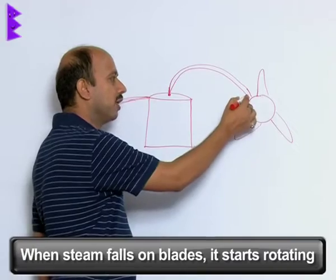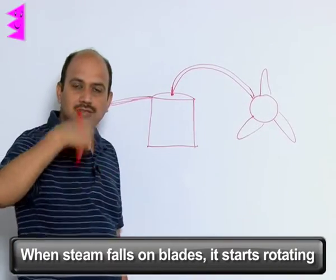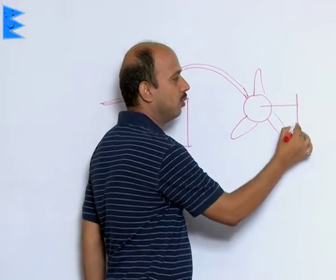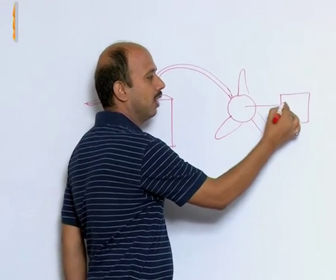When steam falls here, these blades start rotating. Now we can take a device which is called dynamo.